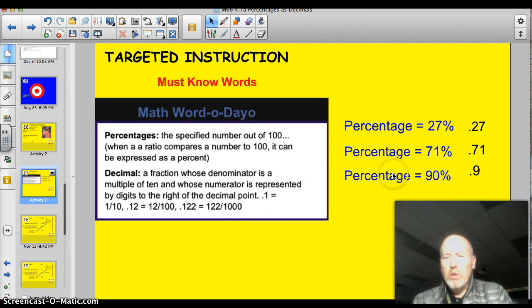Alright, a couple other ones here. 27%, .27. 71%, .71. 90%, .9. Or, if you want, .90. Could it really be this easy? It's pretty easy. Just a couple little tricks I'm going to go over with you.